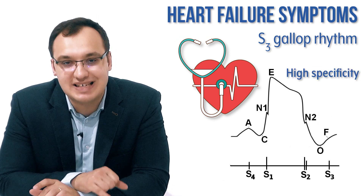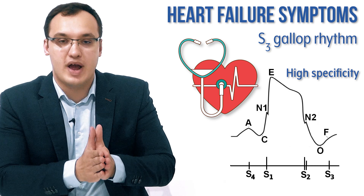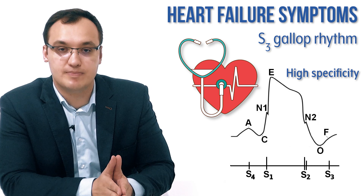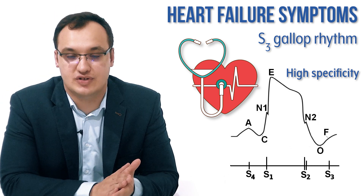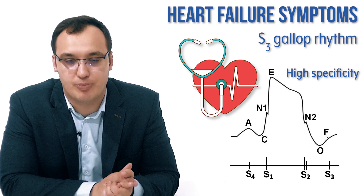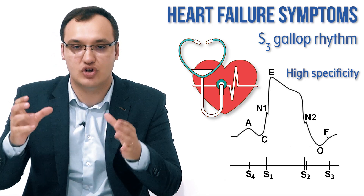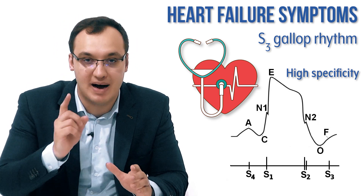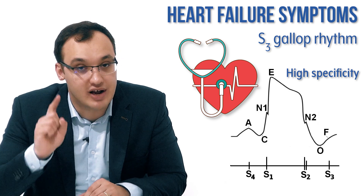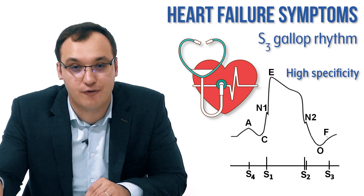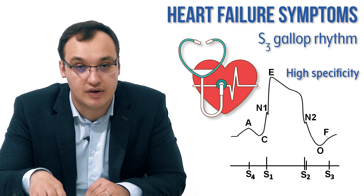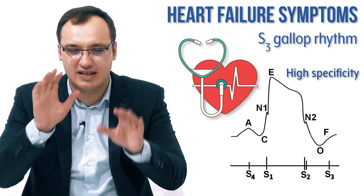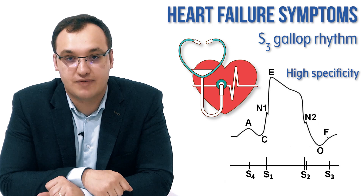S3 gallop has very high specificity. When sensitivity is low — as in S3 gallop — that means not many patients with heart failure have S3 gallop rhythm. But whenever you hear an S3 gallop rhythm, it's pretty specific for heart failure — you can be more sure this is heart failure. This is the difference between sensitivity and specificity.